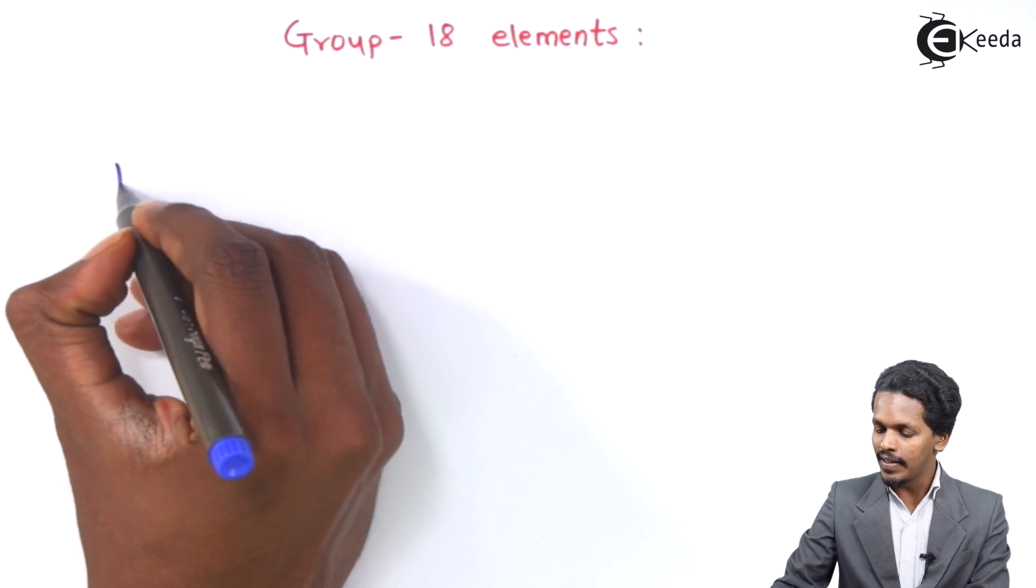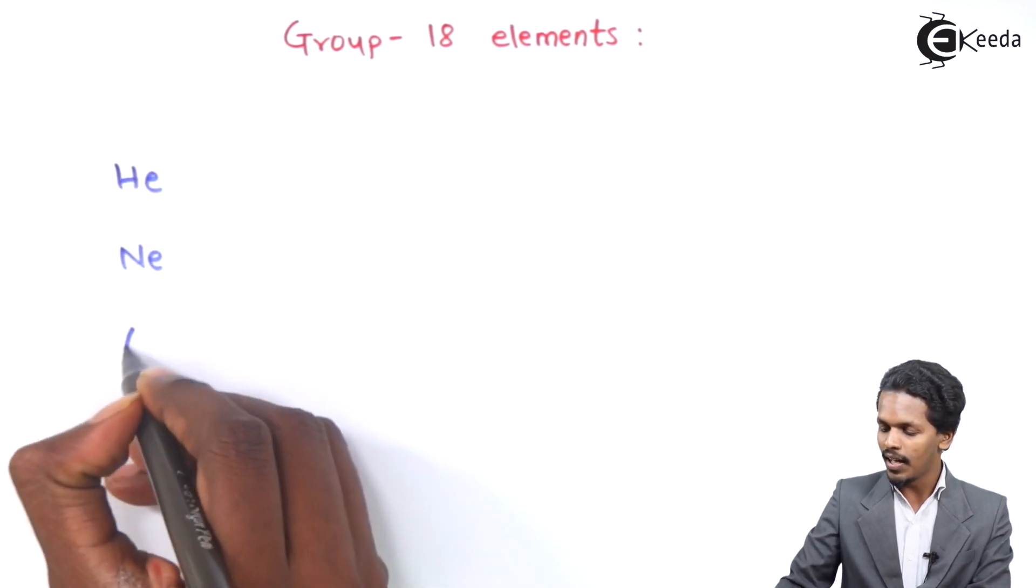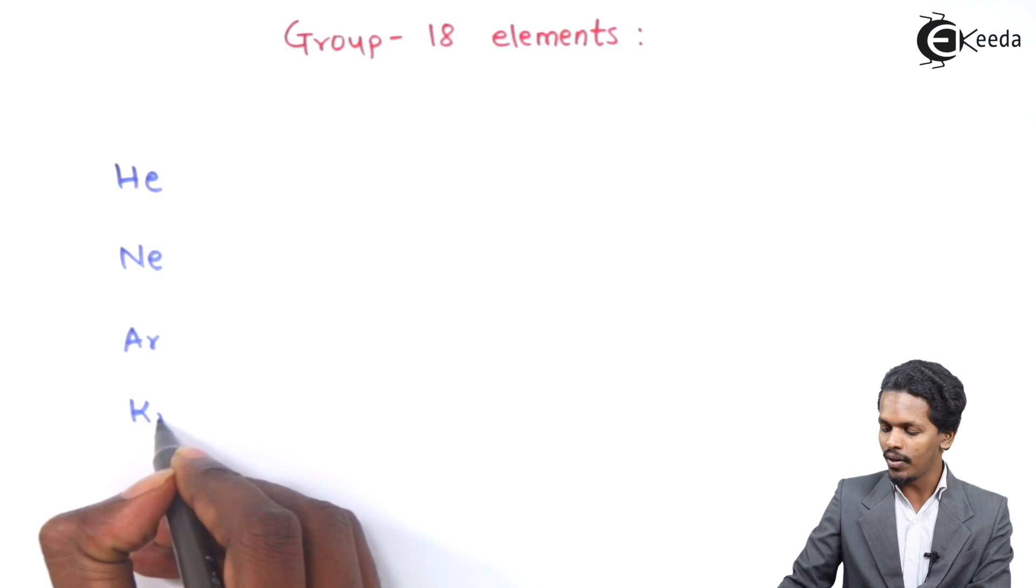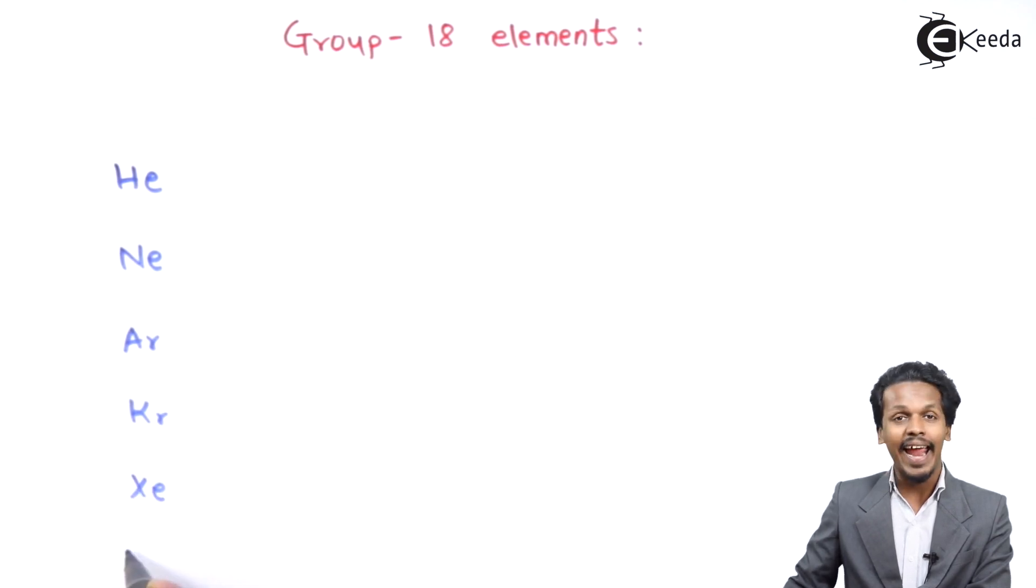And those six elements are: Helium, Neon, Argon, Krypton, Xenon, and Radon.